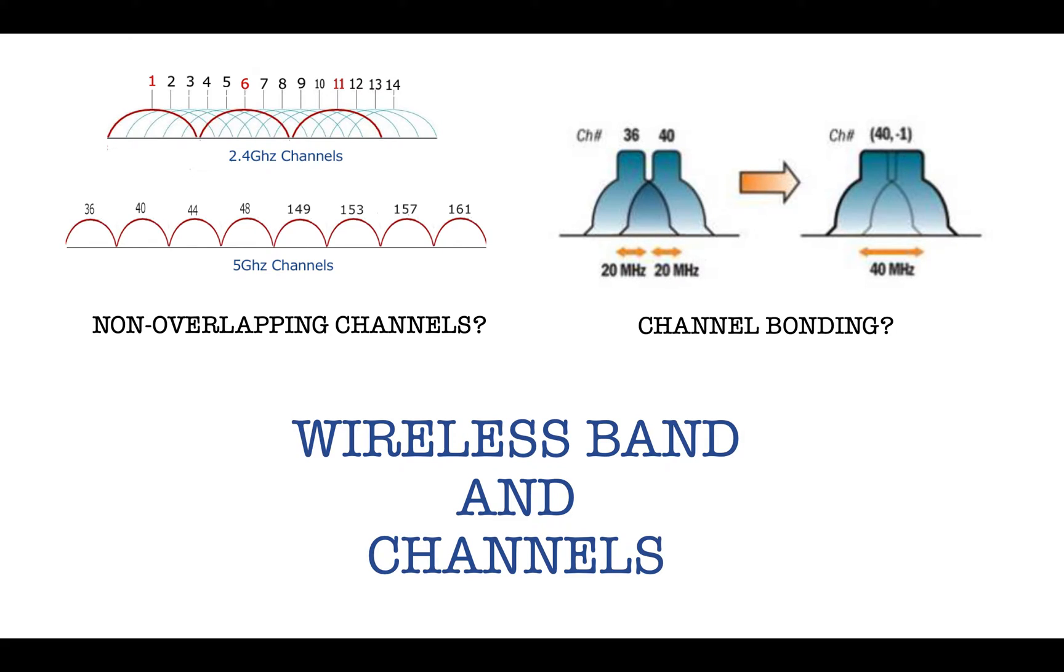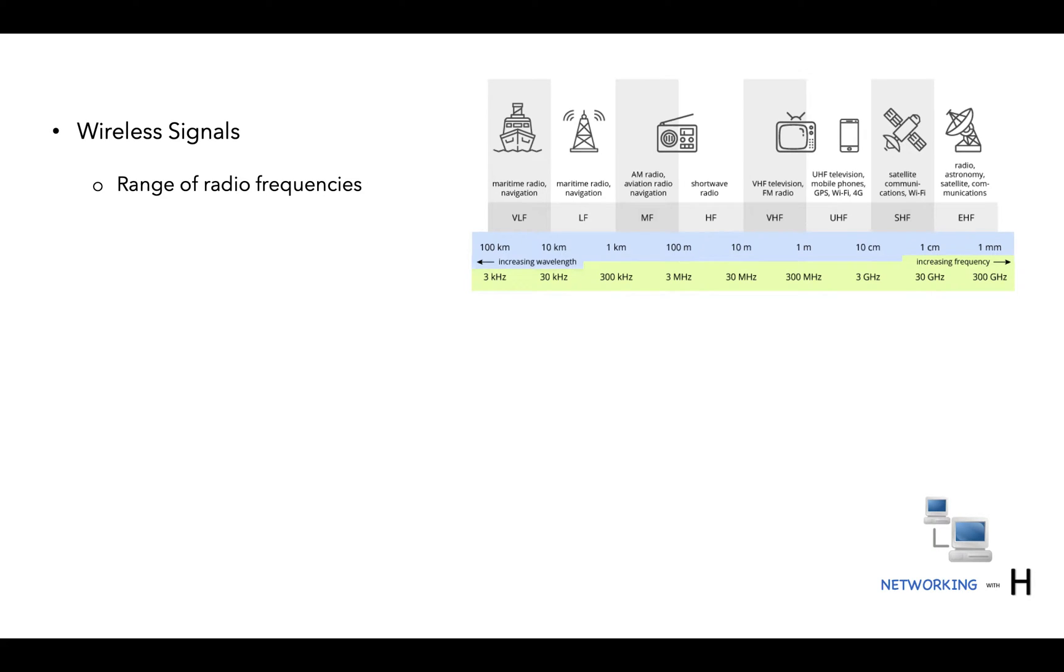Wireless signals occupy a wide range of radio frequencies. These ranges of radio wave frequencies are used to transmit data in the wireless spectrum.